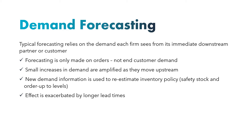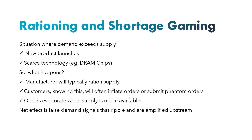That is why the bullwhip effect keeps increasing from one stage to another, that is from downstream to upstream. Forecasting is made only on orders, not on end customer demand. For example, a supplier makes forecasting based on orders placed by the manufacturer, not on demand from the customer. Small increases in demand are amplified as they move upstream, and new demand information is used to re-estimate inventory policies. The effect is also exacerbated by long lead times.